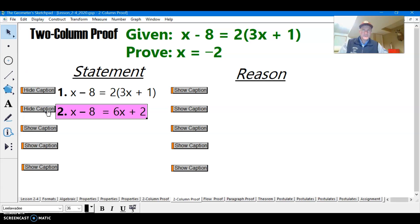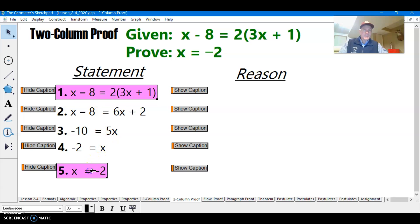And if statement number two is true, then statement number three is true. And if three is true, then four is true. And if four is true, then five is true. Therefore, since they are all linked, if statement number one is true, then statement number five has to be true. So we just proved that if x minus eight is equal to two times the sum of 3x and one, that x equals negative two.